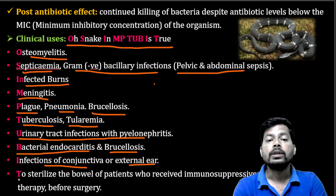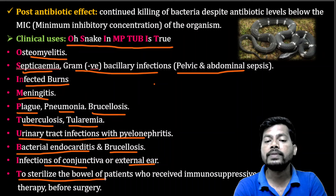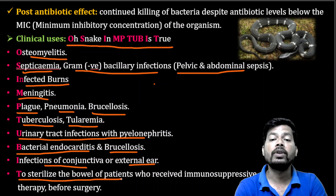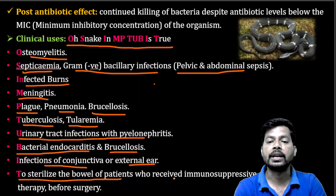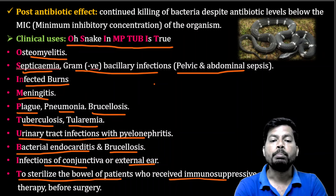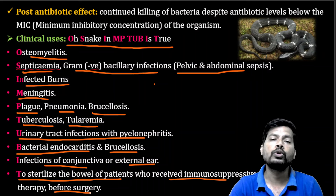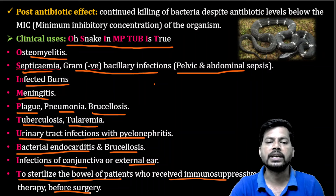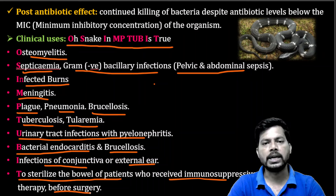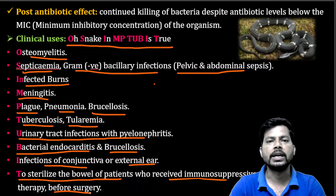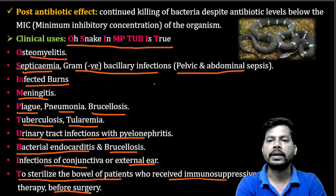Aminoglycosides are also used to sterilize the bowel — meaning the intestine — of patients who received immunosuppressant therapy before a surgical procedure. Before going into surgery, especially patients who received immunosuppressant agents, their bowel should be sterilized to remove unwanted bacteria.